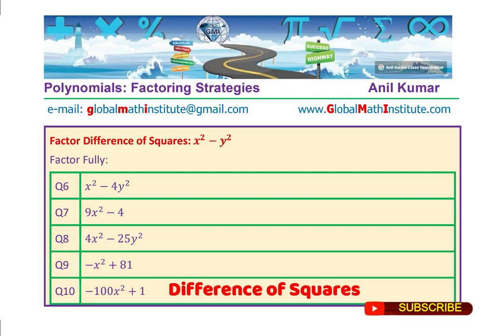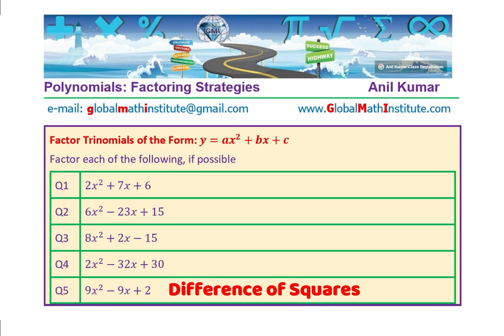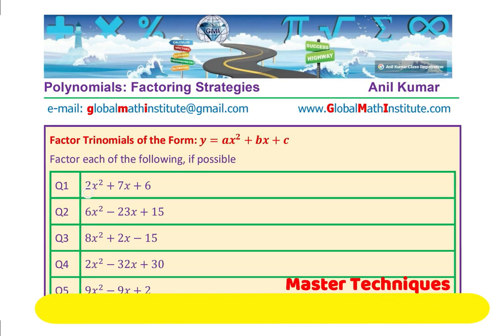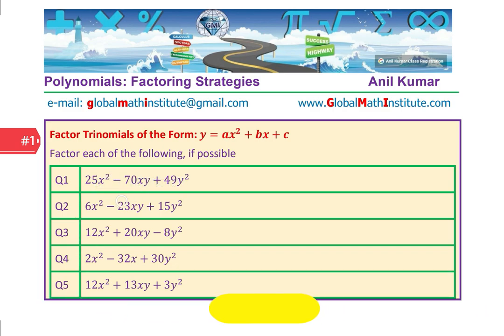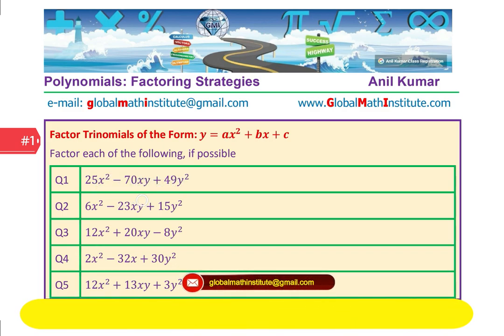We will have factoring where the coefficient of x squared is not 1. When it is not 1, it requires slightly more steps. Those are the questions which you may have to look into and practice. Some of them can be difficult and time-consuming. Then we have similar kind where we have x and y, two parameters involved in the trinomial, and that should help you to understand the whole concept.